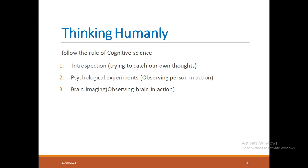How do you make your AI model think like a human? It is purely on the basis of cognitive science. The first method is introspection. As humans, when we say or do something, we introspect whether it is good or bad. Similarly, a machine should introspect the tasks it is performing.